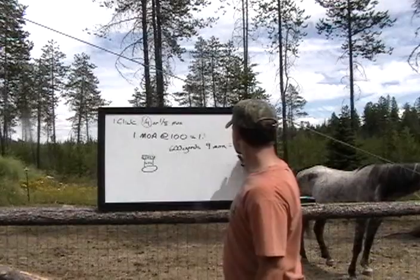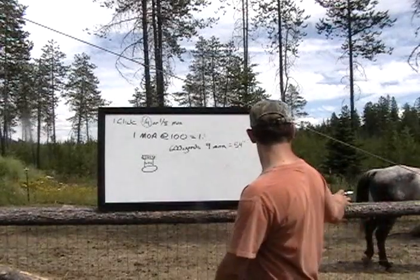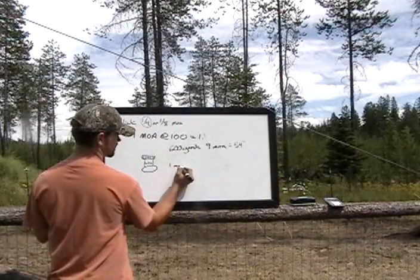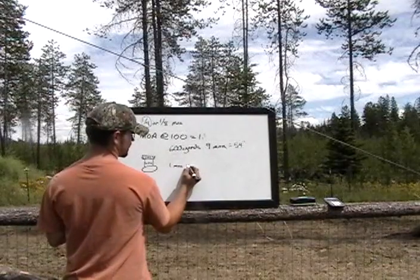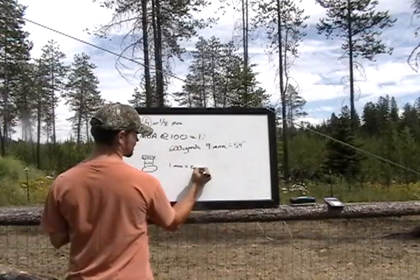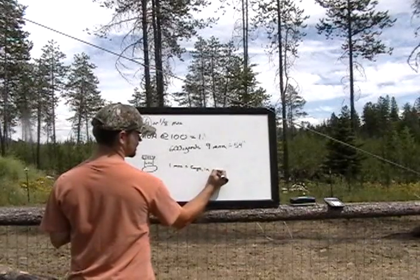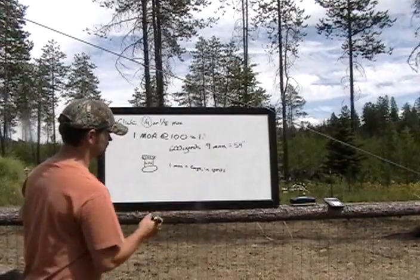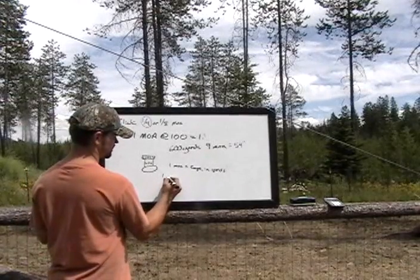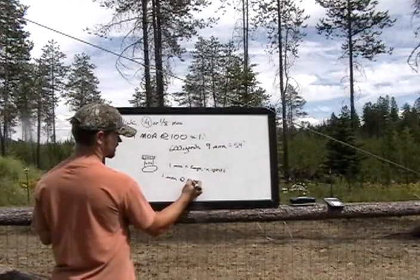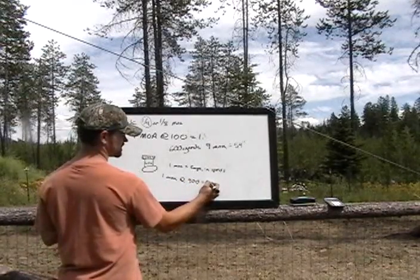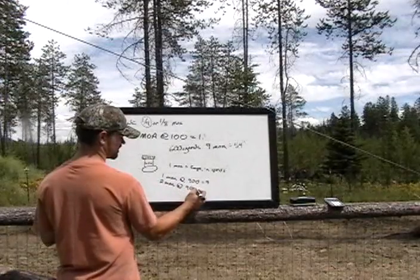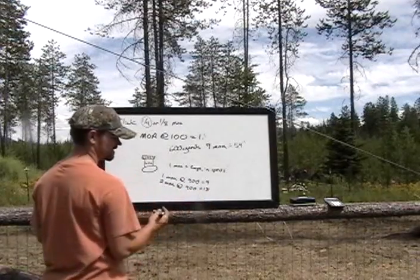Now, how this works is, I'm going to draw you a little table here. 1 minute of angle times range in yards. And this works if it's 2 minutes of angle, 3 minutes of angle, etc. So, 1 minute at 900 yards equals 9 inches. 2 minutes at 900 yards equals 18 inches.